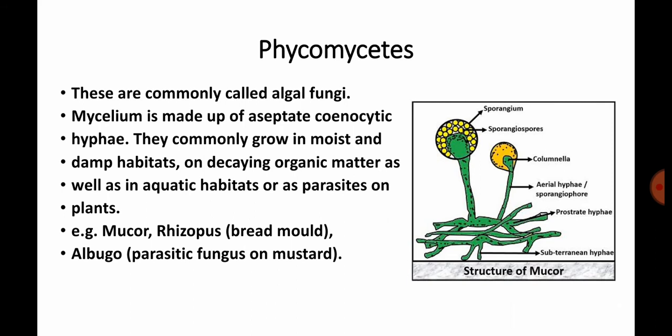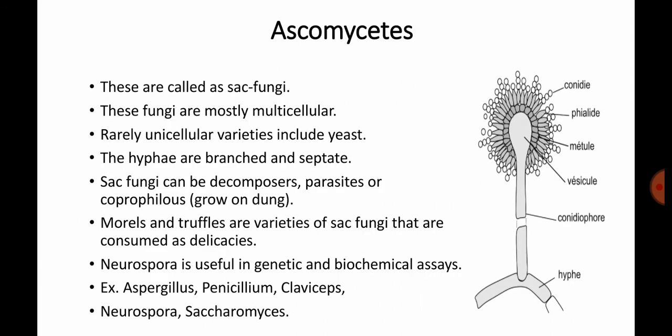Key characters of Phycomycetes: they are algal fungi, septa are absent meaning coenocytic hyphae, and they grow mainly in moist and damp places. Examples include Mucor and Rhizopus. The sporangium contains spores called sporangiospores. The aerial hyphae contain a structure called columella. The prostrate hyphae are coenocytic hyphae.